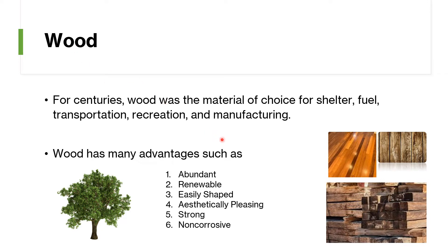We all know what wood is. For centuries and centuries, wood was the material of choice. We use it for shelter, fuel, transportation, recreation, and manufacturing. We have many advantages using wood because they are abundant, they are renewable, and they can be easily shaped. They are definitely aesthetically pleasing, may look good, also strong, and non-corrosive.